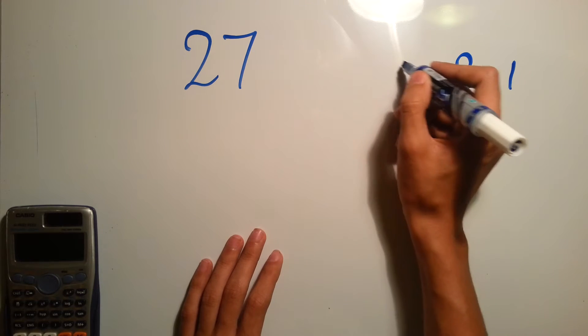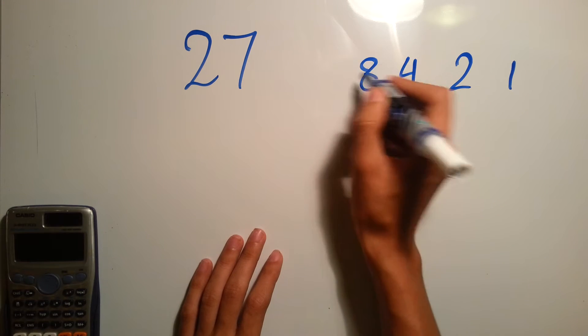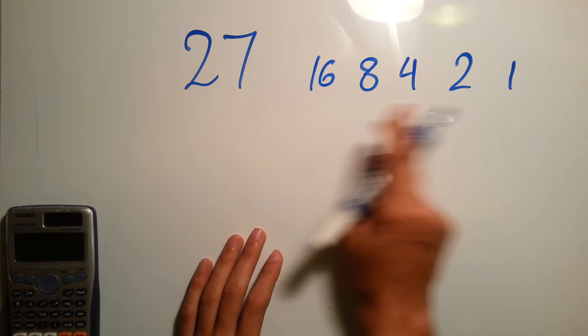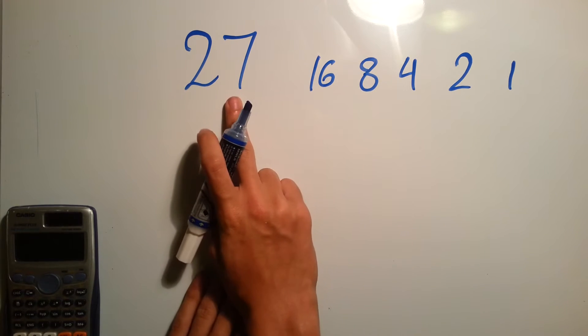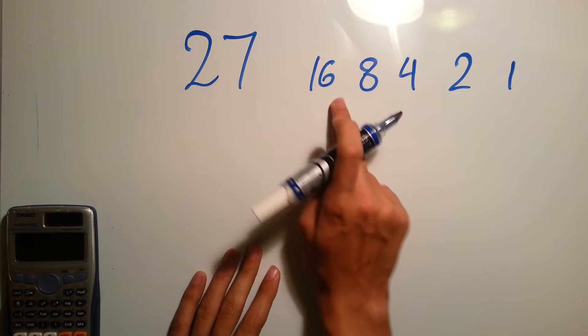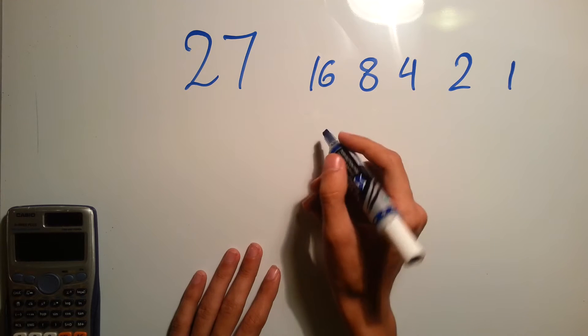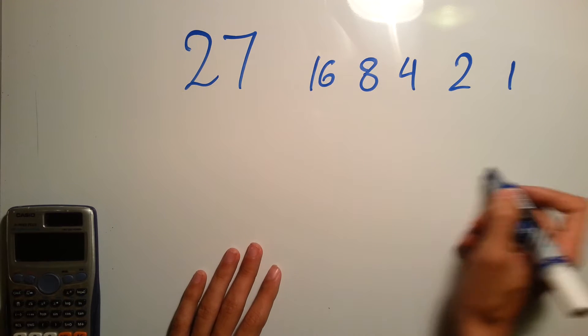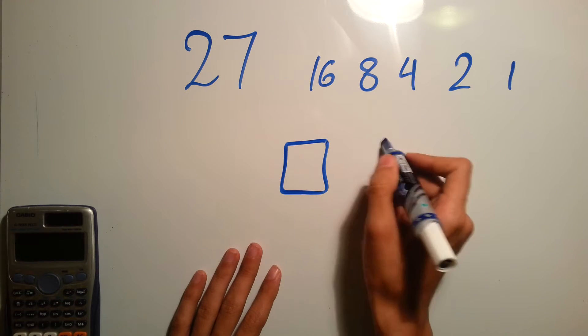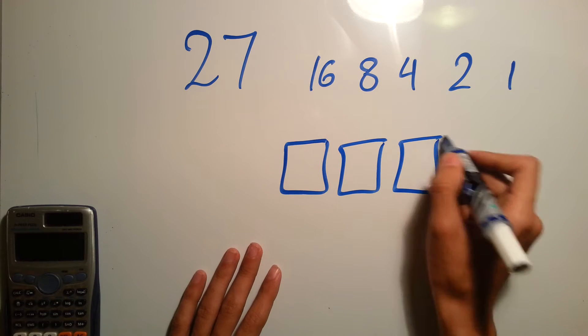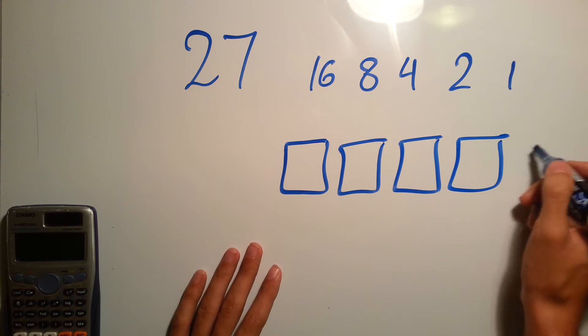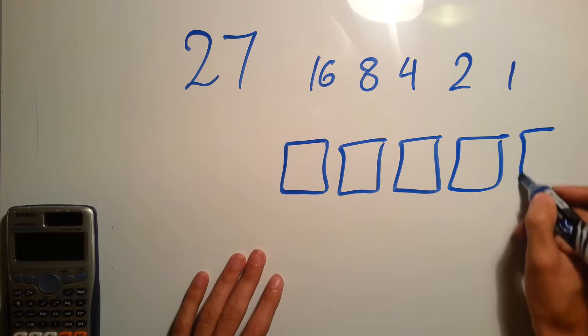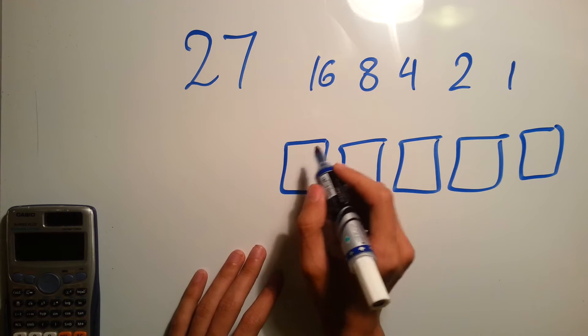You already have 27, so you will definitely use the largest number, which is 16. So you directly know that these are the five digits, and you know you will use this one.